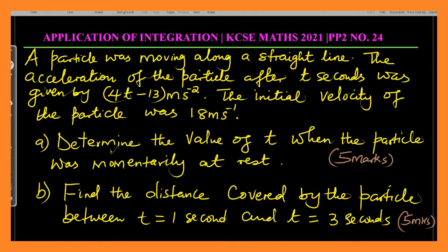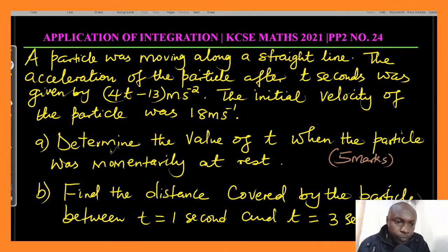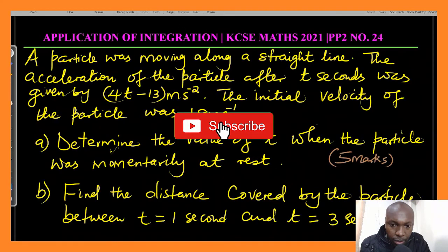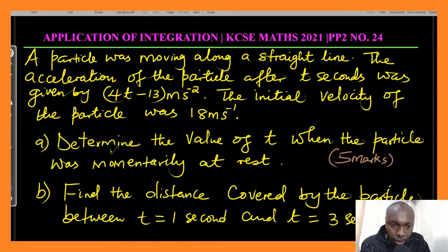Let us jump straight to the solution. We begin by looking at what we're given. We are given acceleration a = 4t minus 13, and the initial velocity is given as 18 meters per second.